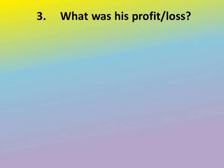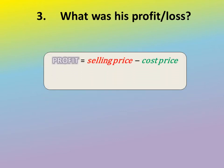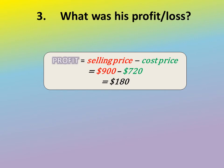The final question about Philip: what was the value of his profit? We already established he made a profit. Profit = Selling Price − Cost Price. The selling price was $900 and the cost price was $720, so $900 − $720 = $180. Philip's profit was $180.